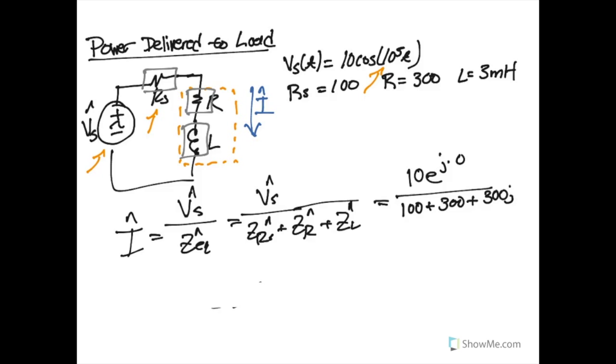The totality for all of this when we write it all together will be 10 divided by 400 plus 300j. Now again we're going to have the common problem of this is in a polar form and this is in a rectilinear form, so we need to take care when we're doing our conversion between all of our different values.